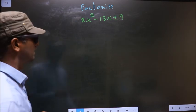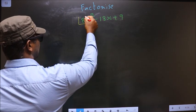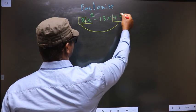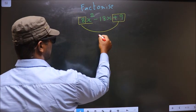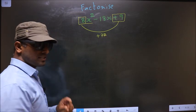The coefficient of x square, that is 8 here, should be multiplied to the constant, which is plus 9. So 8 into plus 9 is plus 72. This is your step 1.